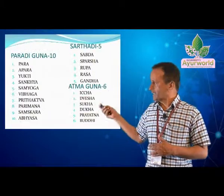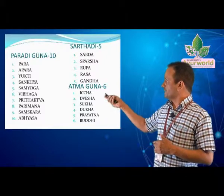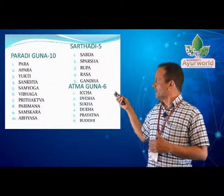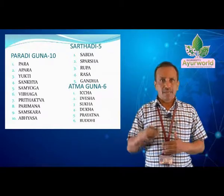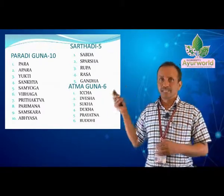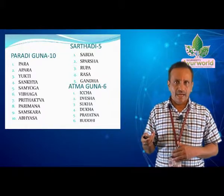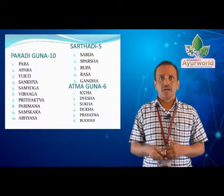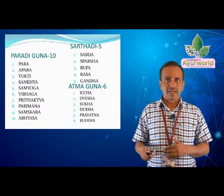These are the other Gunas — Paradi Gunas: Para, Apada, Yuti, Sankya, Samyoga, Vibhaga, Krutakva, Parimana, Samskara, Abhyasam. And Sardana Gunas: Shabda, Sparsha, Rupa, Rasa, Gandha. And Atma Gunas: Chadvesha, Sukha, Dukkha, Buddhi, Prayatna.